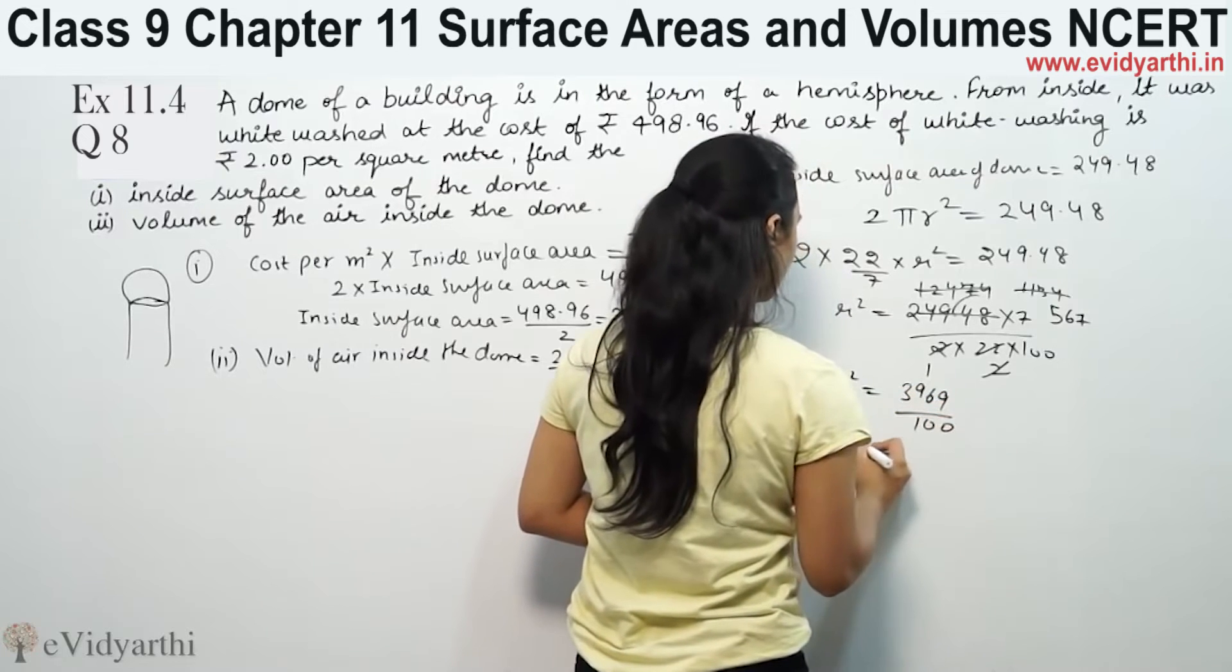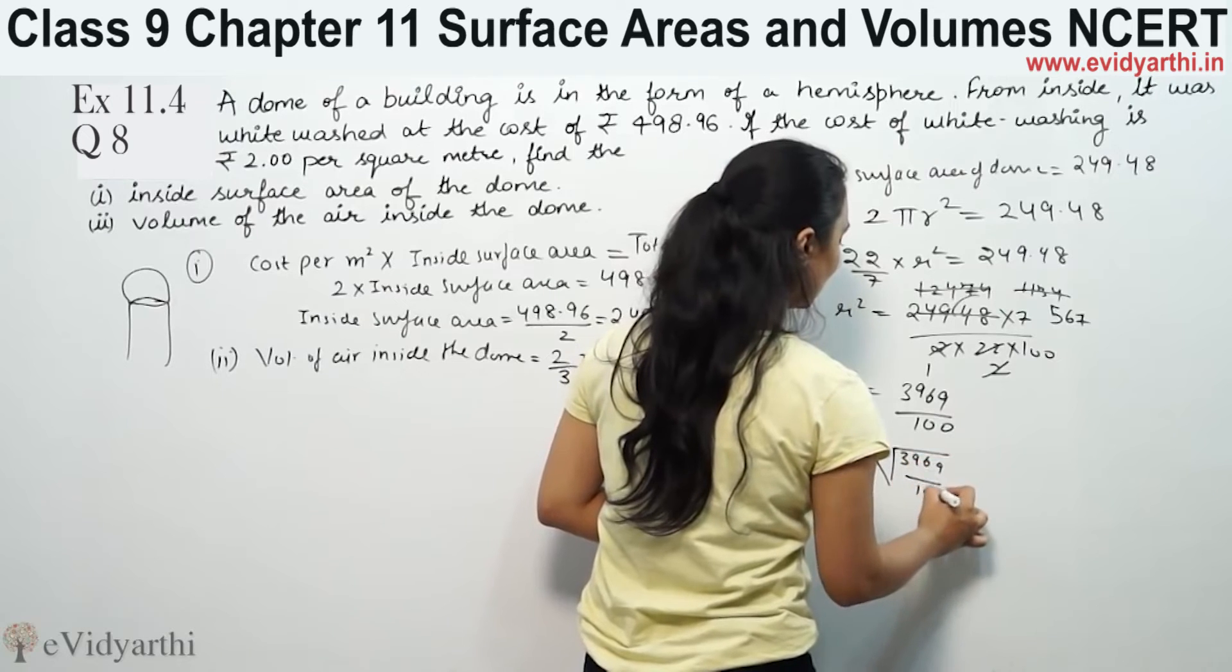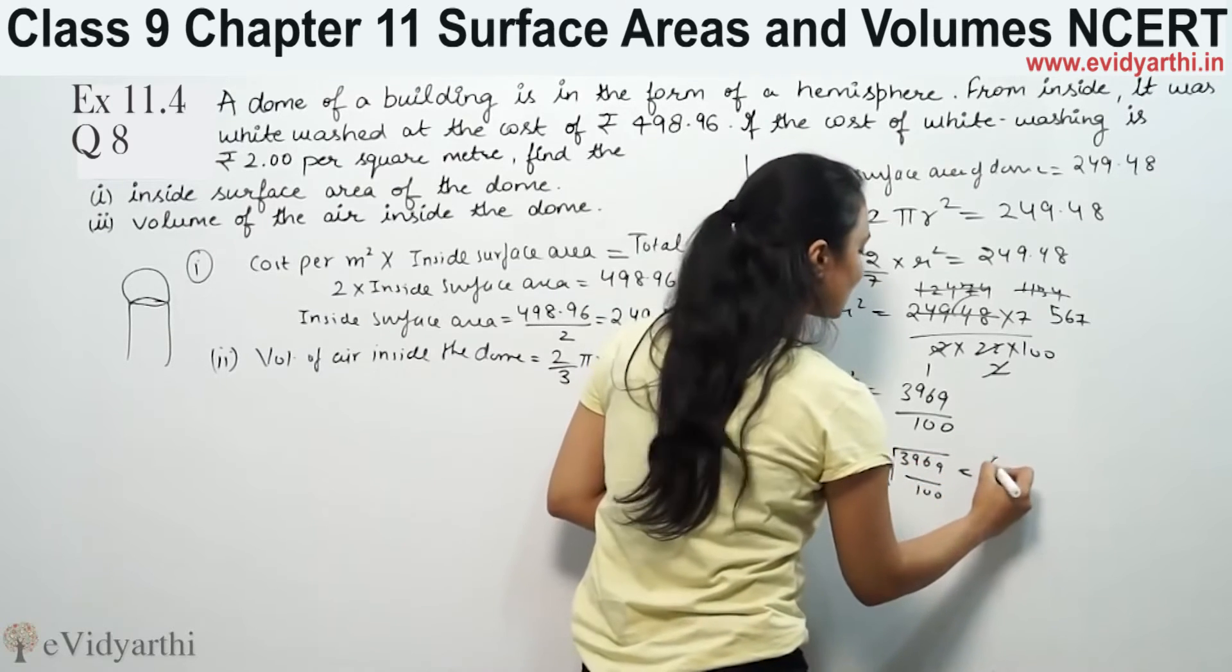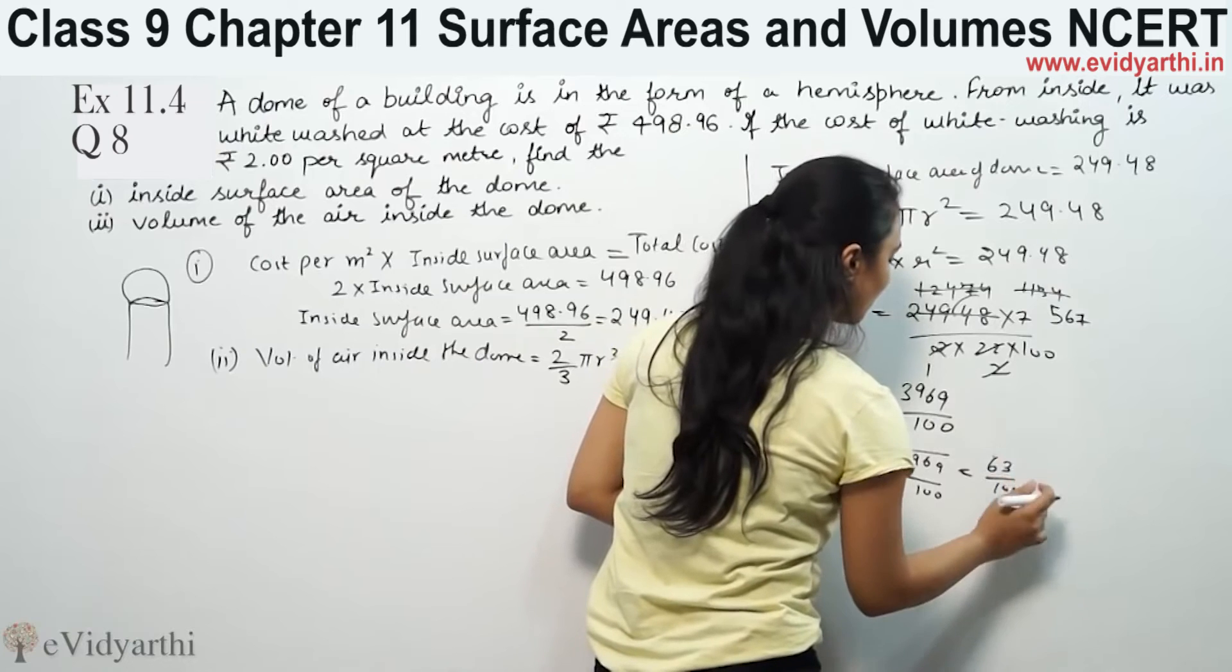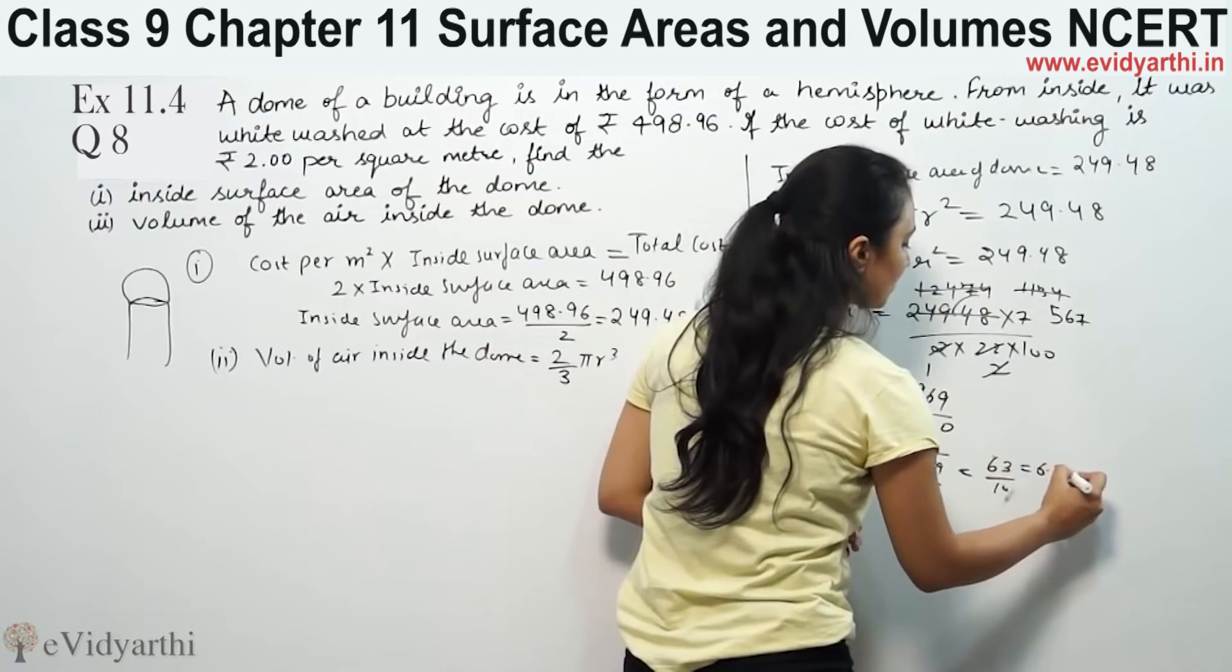r equals square root of 3969/100, which is 63/10. This will be 6.3 meters.